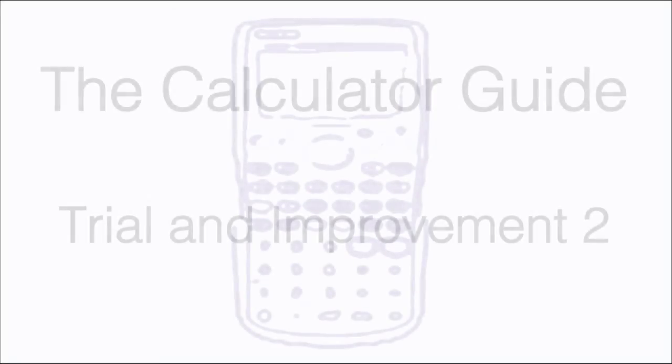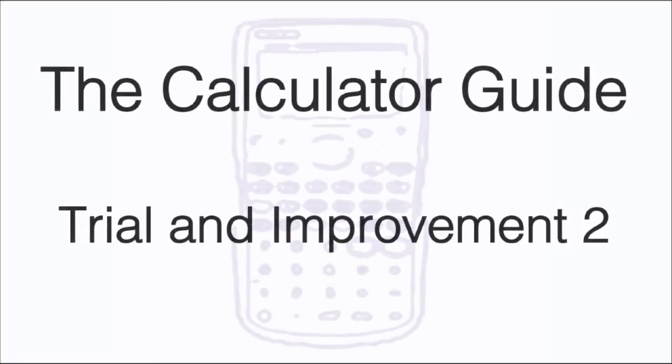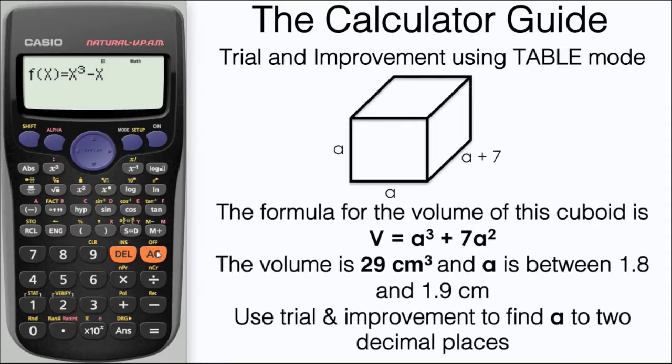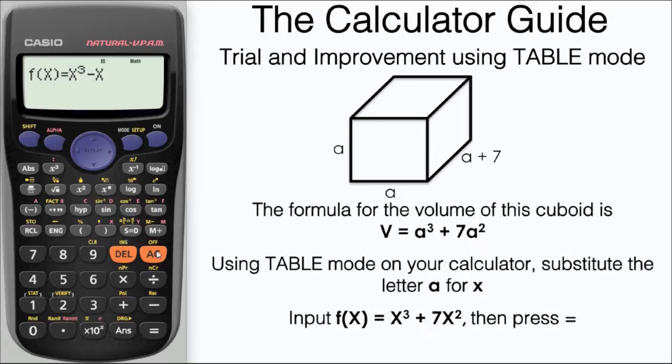Hello and welcome to the second calculator guide video on trial and improvement. In this video we're looking for the value of a where the volume of this cuboid is a cubed plus 7a squared. The volume is 29 centimeters cubed, a is between 1.8 and 1.9 centimeters, and we're looking for an answer to two decimal places.